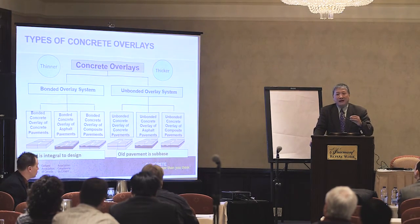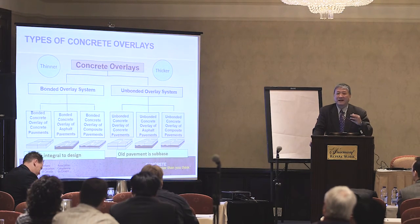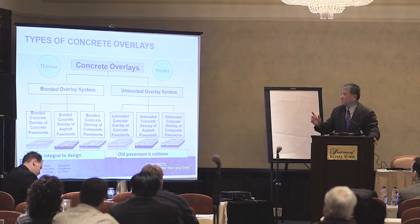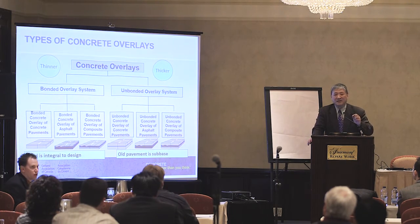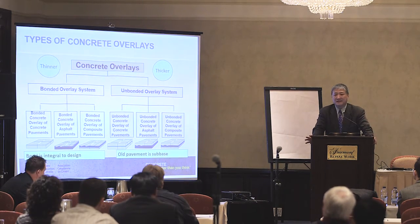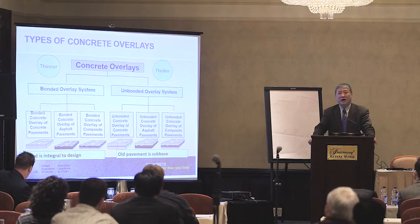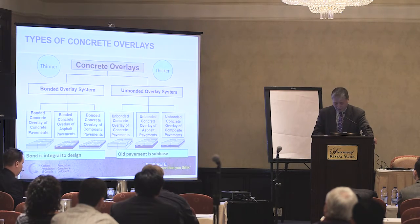The bonding between the new concrete layer and the existing pavement — whether asphalt or concrete — is very critical; it has to be bonded into a monolithic layer. For unbonded overlays, you're constructing a new concrete layer on existing concrete pavement with a one-inch separation layer, using the existing pavement as a base to support the new layer. Uniform support is very critical in both cases.